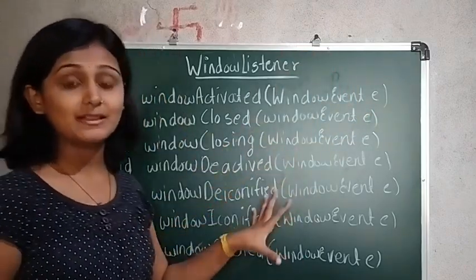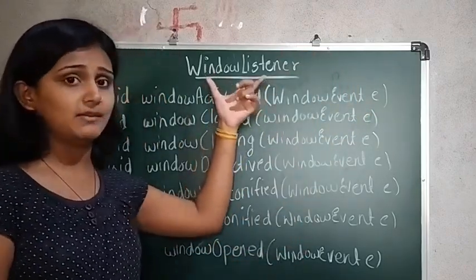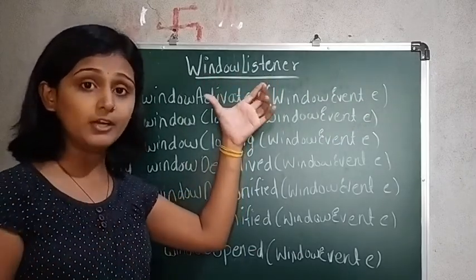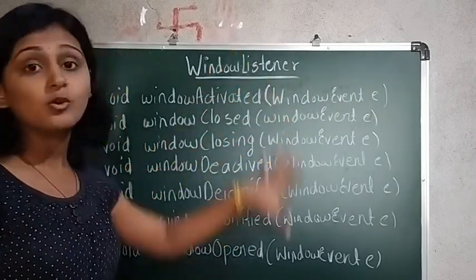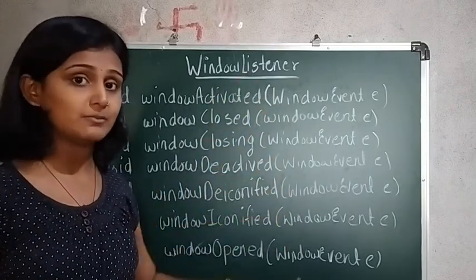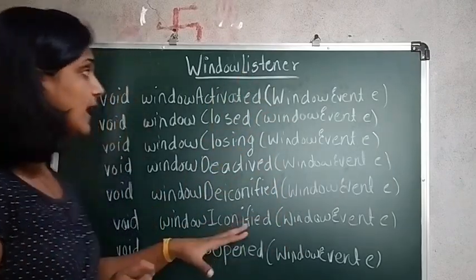Now here, if you see, there are a total of seven methods of this listener. Whenever you are going to apply event handling on a window, at that time we have to overwrite compulsory all this method as per the rule.